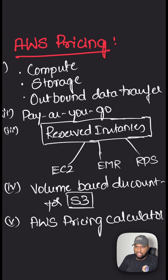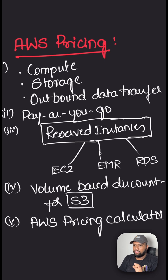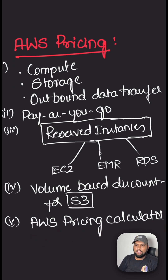For new AWS accounts, the AWS Free Tier is always available. It offers limited usage of AWS products at no charge for 12 months since the account was created. You can also estimate your monthly AWS bill using the AWS Pricing Calculator.